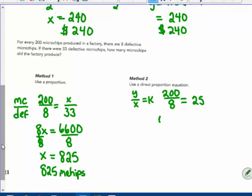So now I have that twenty five times thirty three would be y equals eight hundred and twenty five. So I have eight hundred and twenty five microchips.